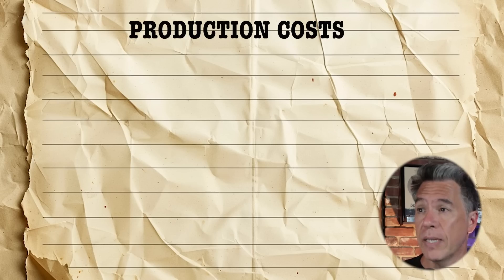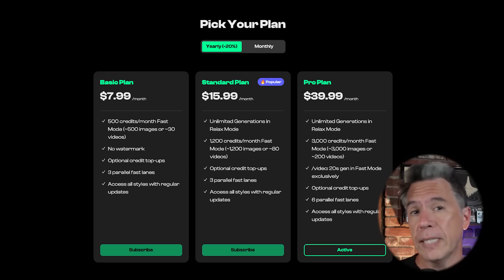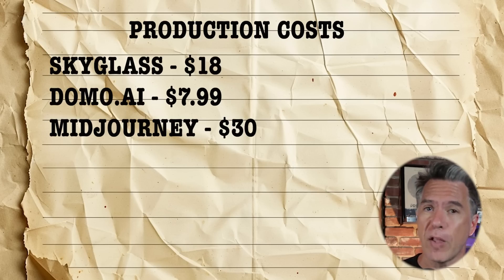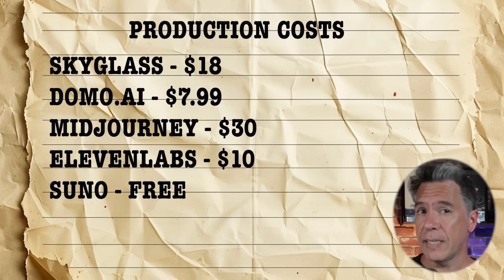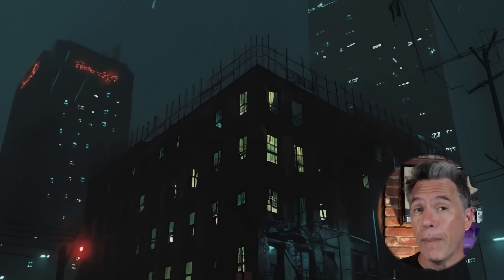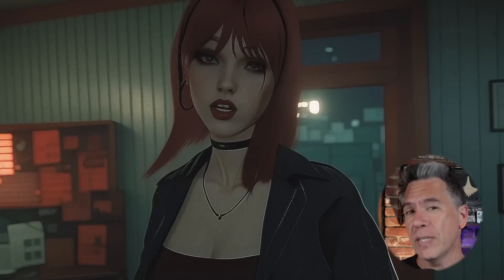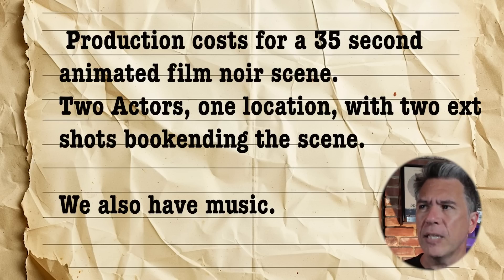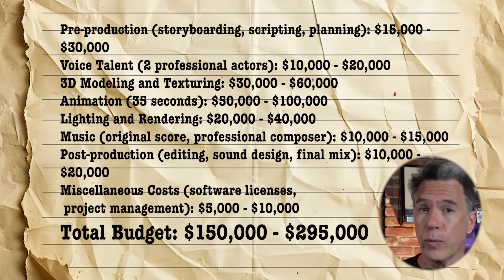In terms of production costs: SkyGlass costs $18 a month. Domo has a few tiers — the lowest is $7.99, and with that plan you could accomplish everything I did here. MidJourney has a $10 plan; I'm on the $30 plan because I use it all the time. 11 Labs is $10. Suno I used the free version of. That brings us to a grand total of $65.99. As I discussed in my Dead Sea production breakdown, I'm ignoring my own personal costs — but even if I took my half-day rate and quadrupled it, the comparison against a traditional pipeline is striking.